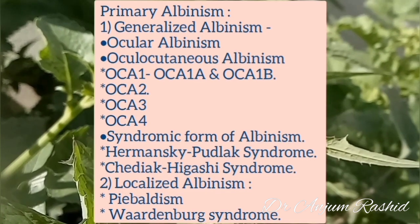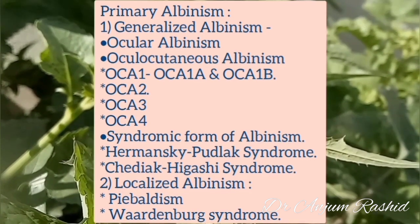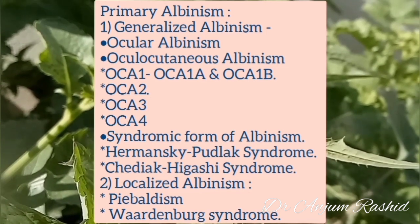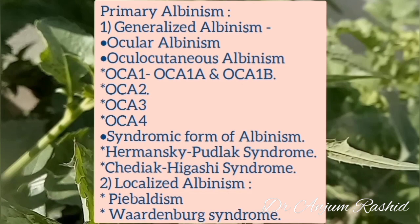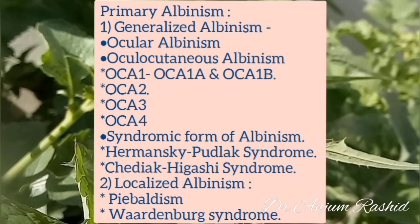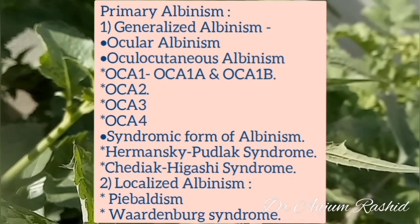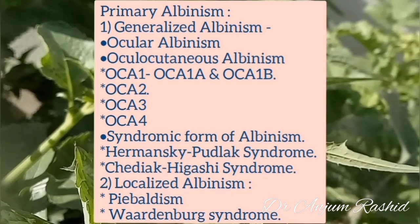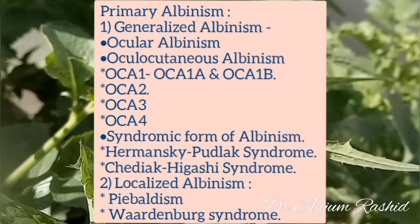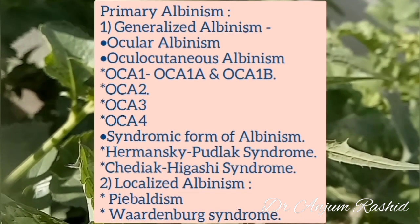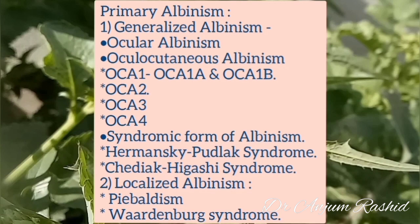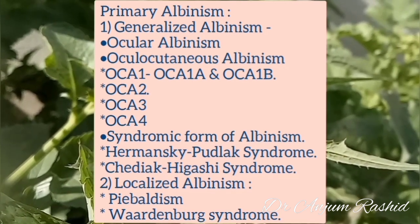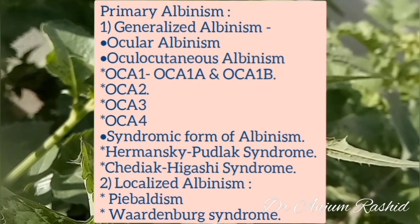The clinical classification of albinism: primary albinism is divided into generalized albinism and localized albinism. Generalized albinism can be ocular or oculocutaneous, with four types: OCA1, OCA2, OCA3, and OCA4. OCA1 is further subdivided into type 1a and type 1b. The second form of generalized albinism is the syndromic form, which includes Hermansky-Pudlak syndrome and Chediak-Higashi syndrome.